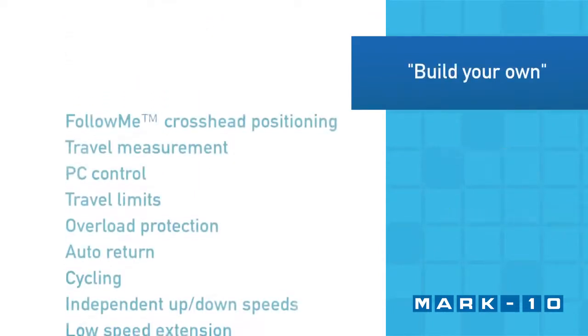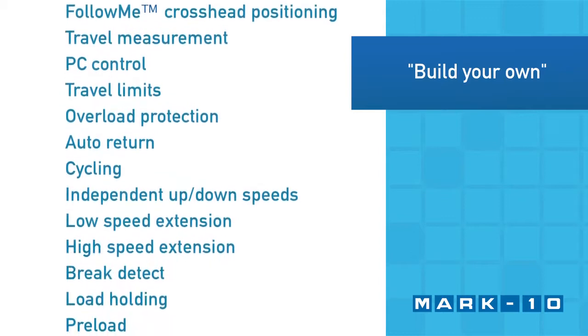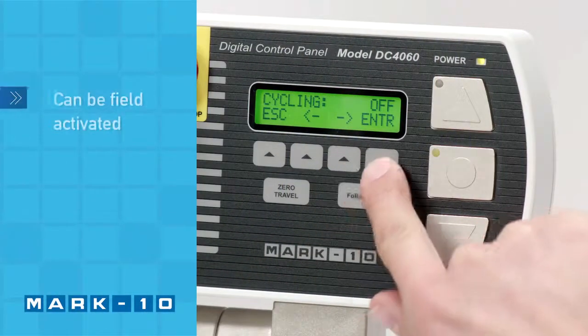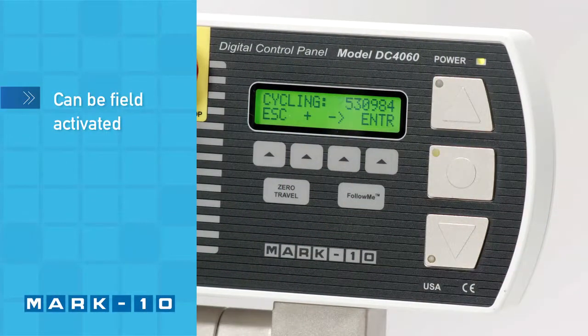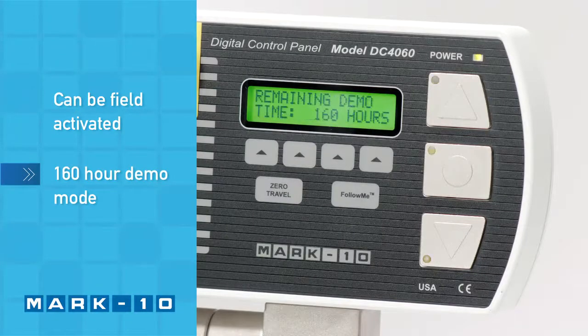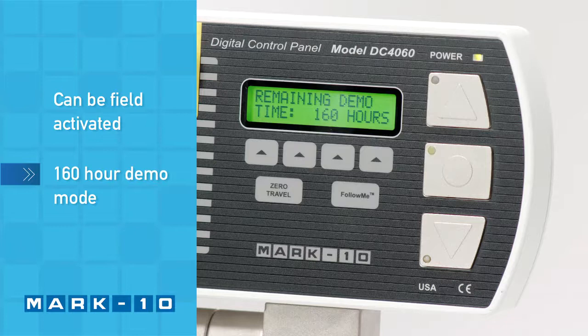The ESM303 can be custom configured to your needs and budget through its unique function configuration platform. Functions not originally ordered can be enabled in the field by inputting an activation code. All functions are temporarily enabled for a 160-hour demo period.